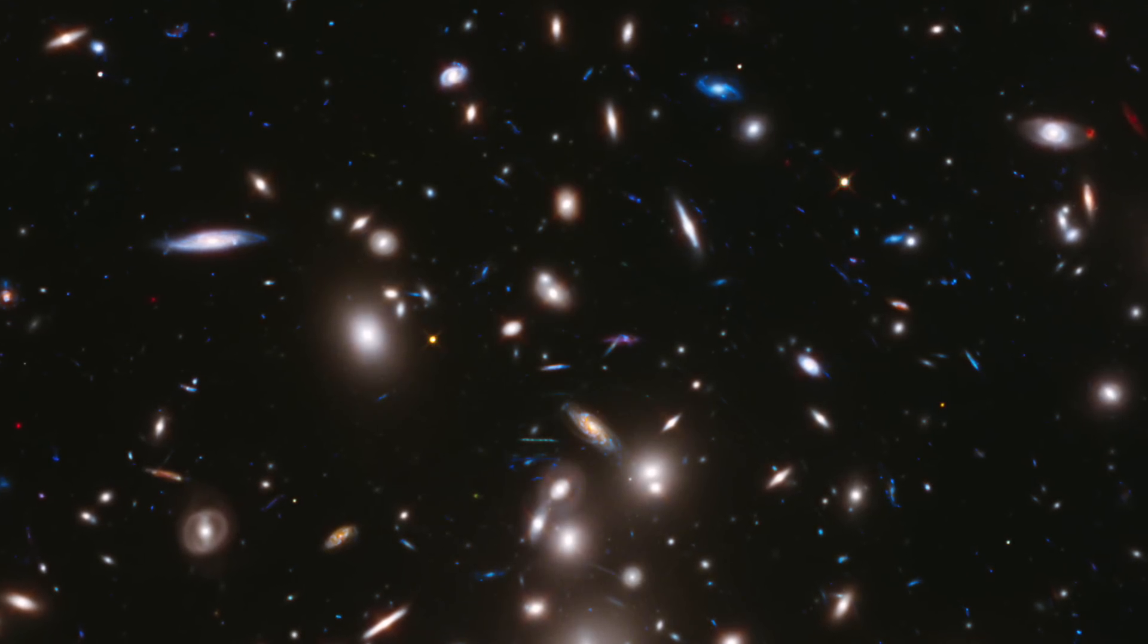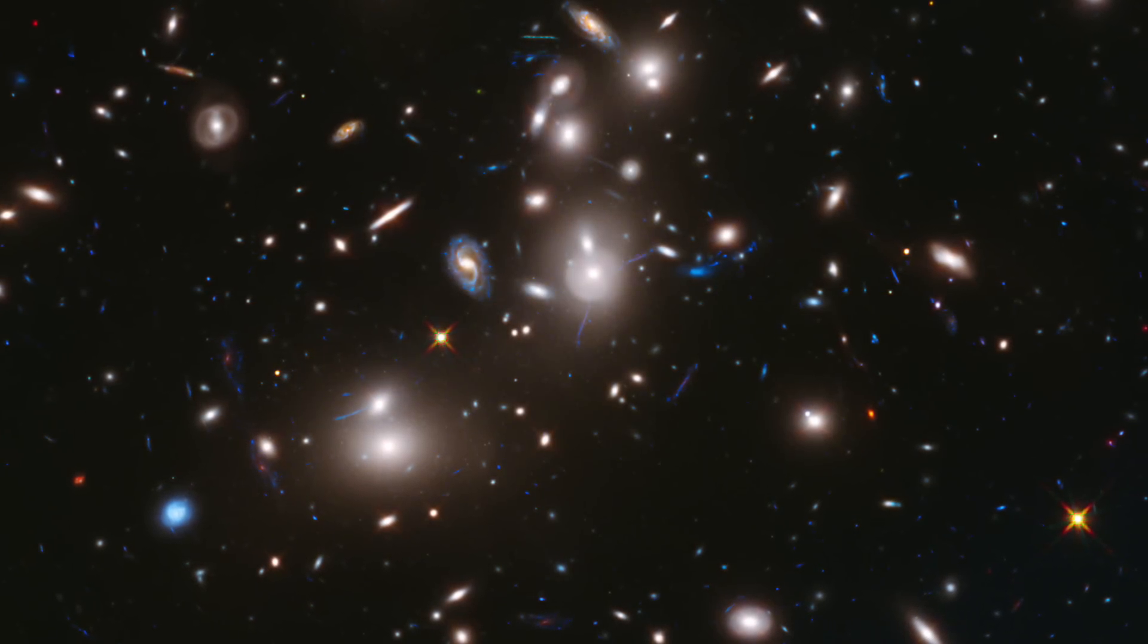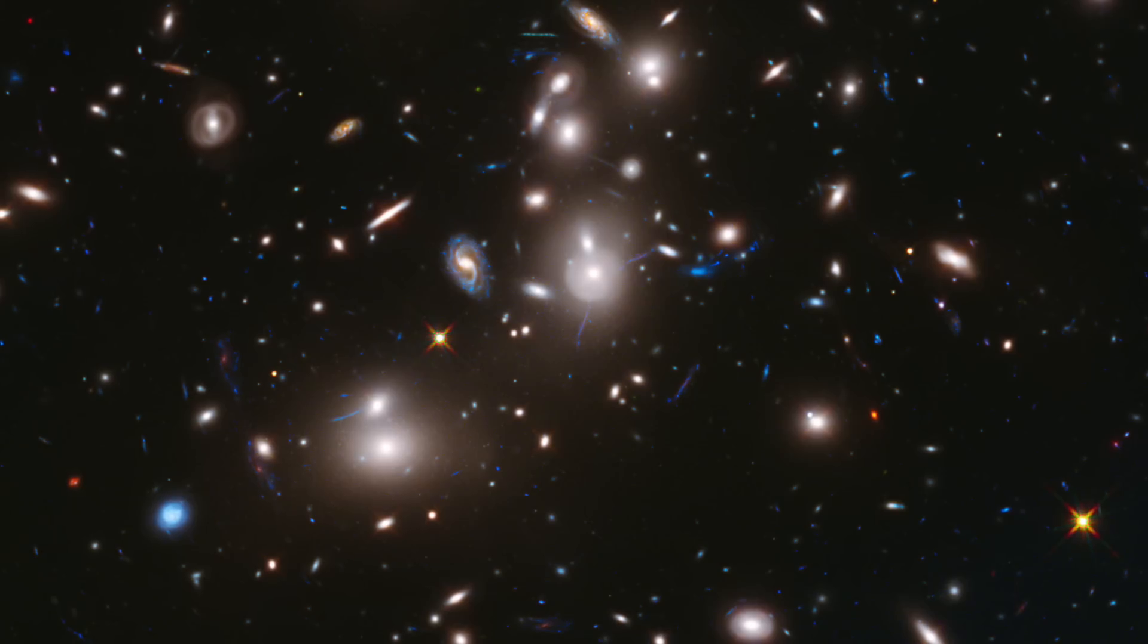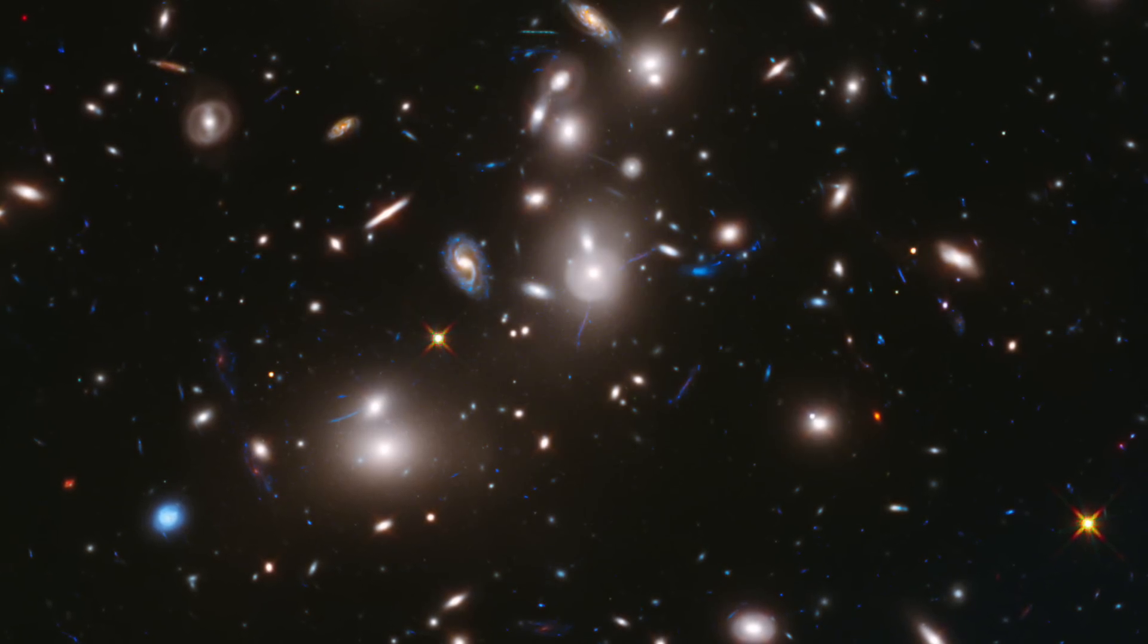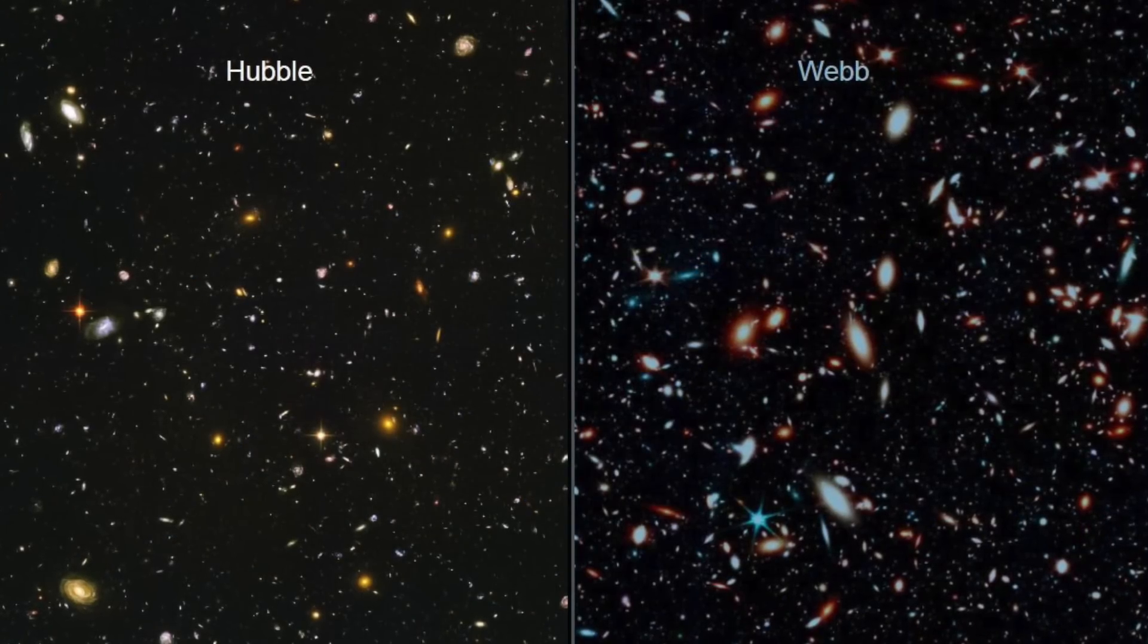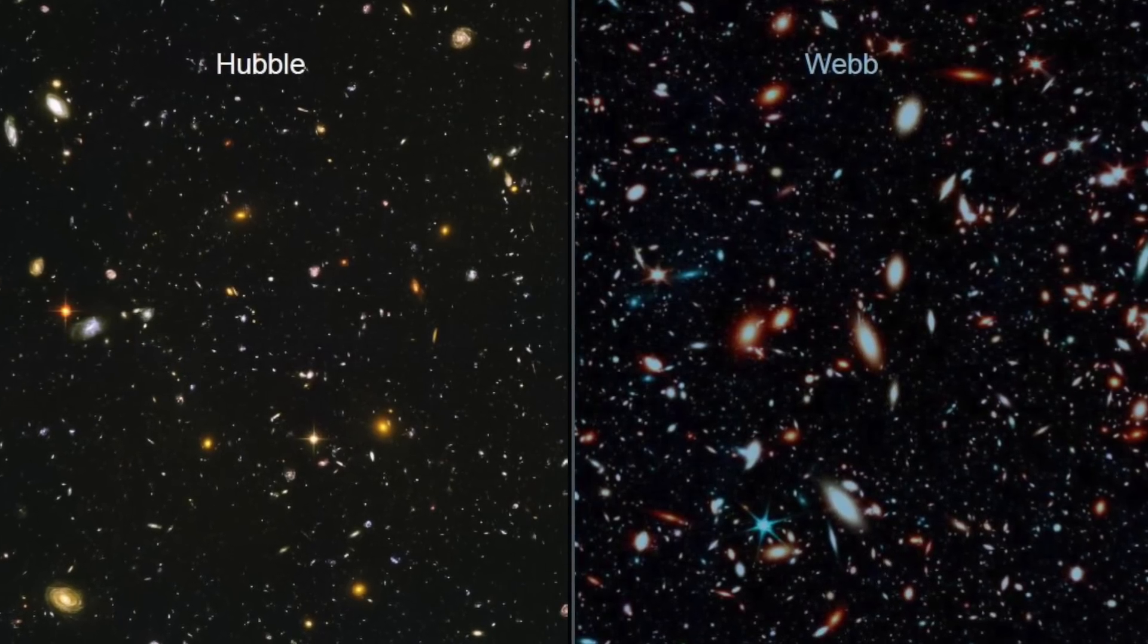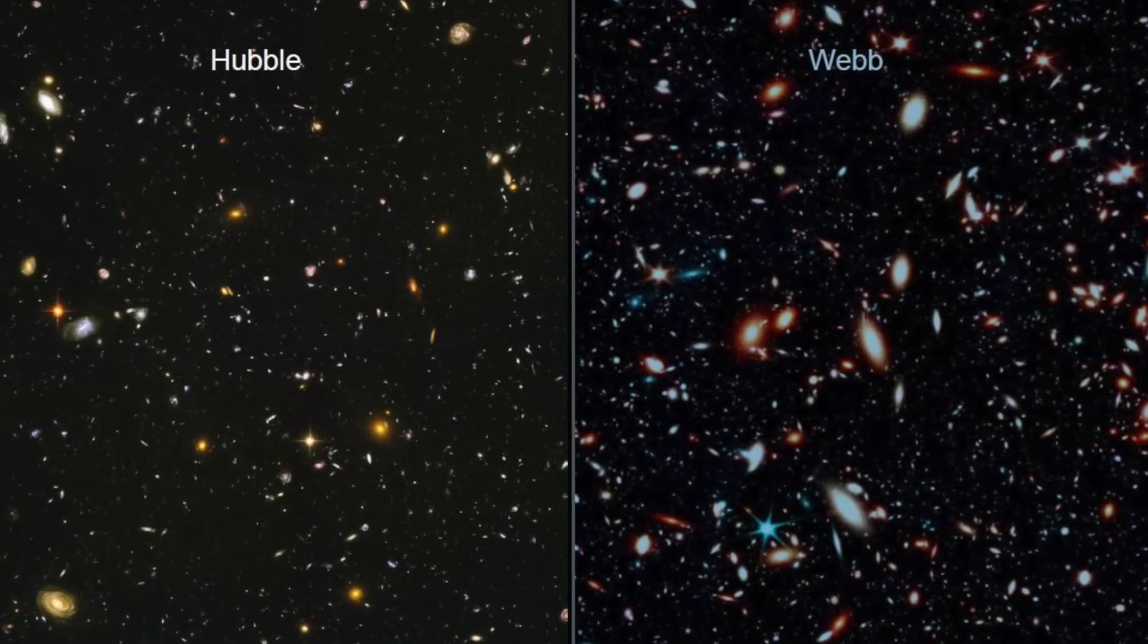The purpose of the James Webb Space Telescope is to send back the deepest images of our universe that have ever been taken. Scientists have been anticipating these photos for the past six to eight months. When comparing test photos of stars in the Milky Way with Spitzer Space Telescope, which was launched in 2003, the James Webb Space Telescope images are much crisper, more focused, and richer in color.